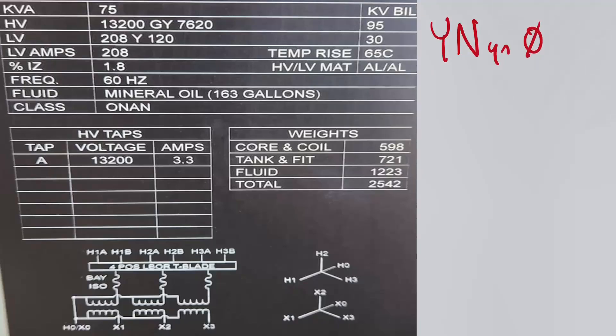And the reason why it's labeled like this is because the primary is always capital letters. And so this is our primary right here. And so it's a Y and the neutral is brought out, it is accessible. You can also see that if you look over here, your HO and XO are commonly bonded and they were brought out of the transformer. So that's why this is a Y,N, and both letters are capital, because it's the primary. Now the primary is also assigned by default at a 12 o'clock position. So it doesn't matter which phase you look at from the primary to the secondary, it just matters that you're looking at the same phase.